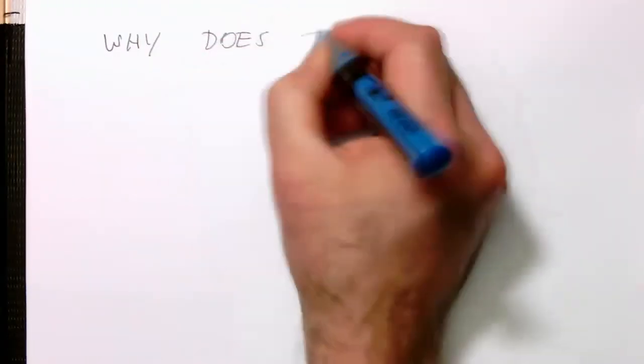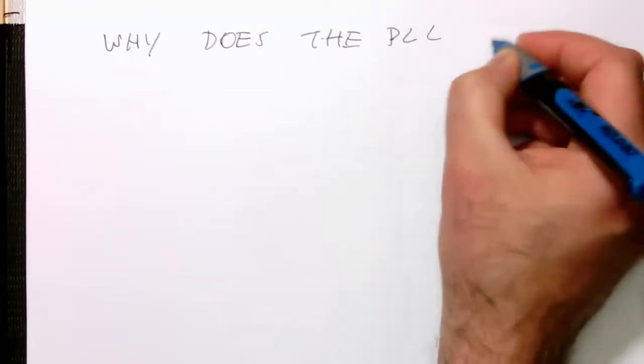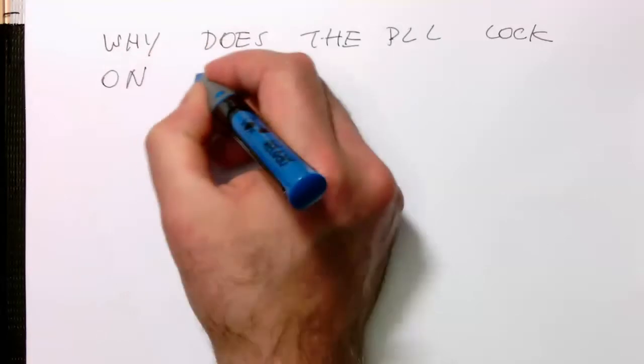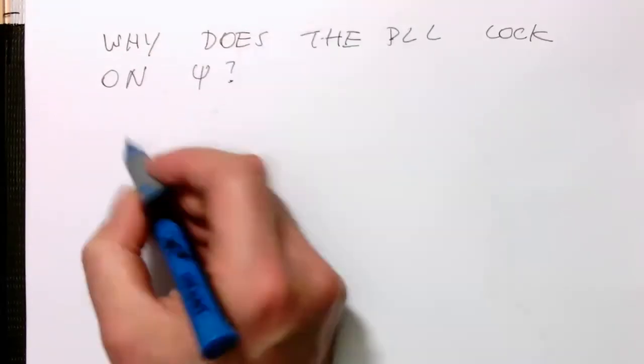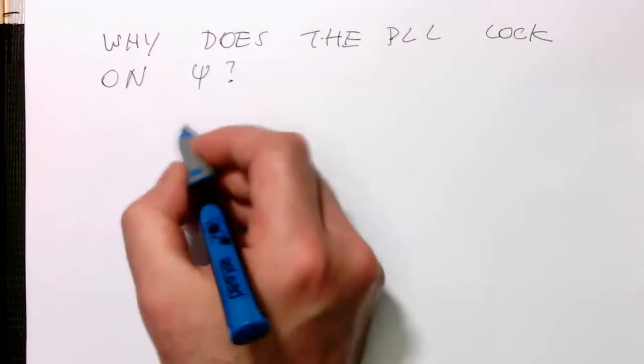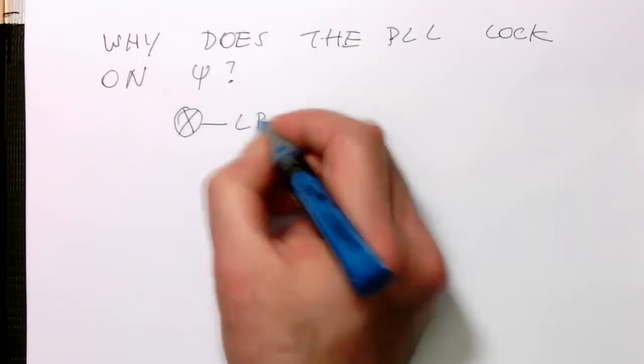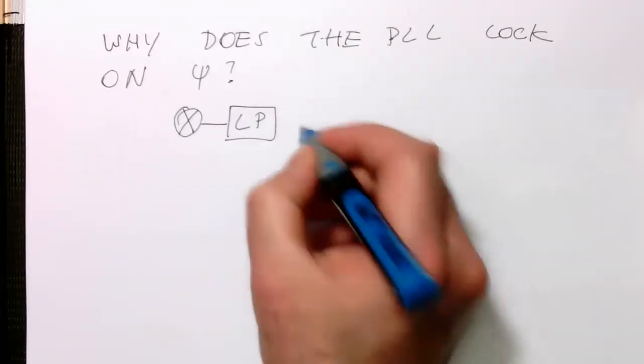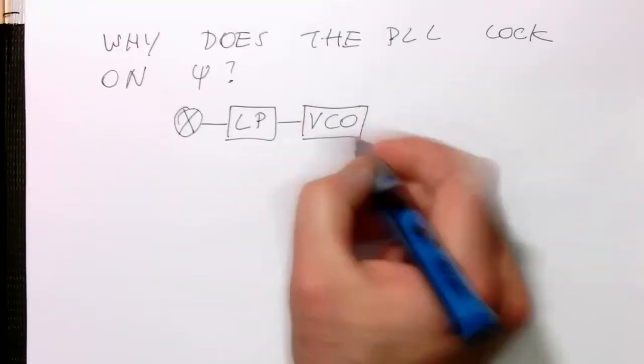So why does the PLL lock on psi? Let's just quickly redraw this diagram here. So we've got our phase comparator here, and that's our low-pass filter here. That's our VCO.